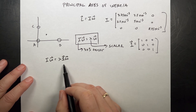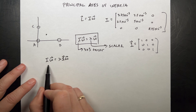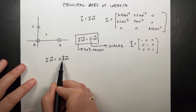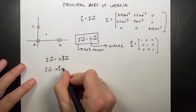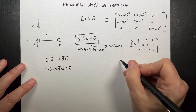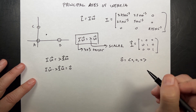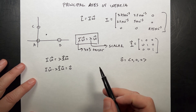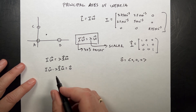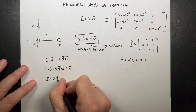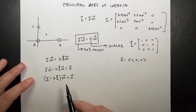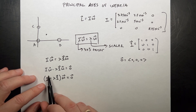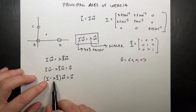Now I can subtract lambda·1·omega from both sides. Remember this is a vector, so I get: I·omega minus lambda·1·omega equals the zero vector — that's (0,0,0), not the scalar zero. I can factor out omega and get: (I minus lambda·1) operated on omega equals zero. It turns out the only way a matrix operated on a nonzero vector gives zero is if the determinant of that matrix is zero.